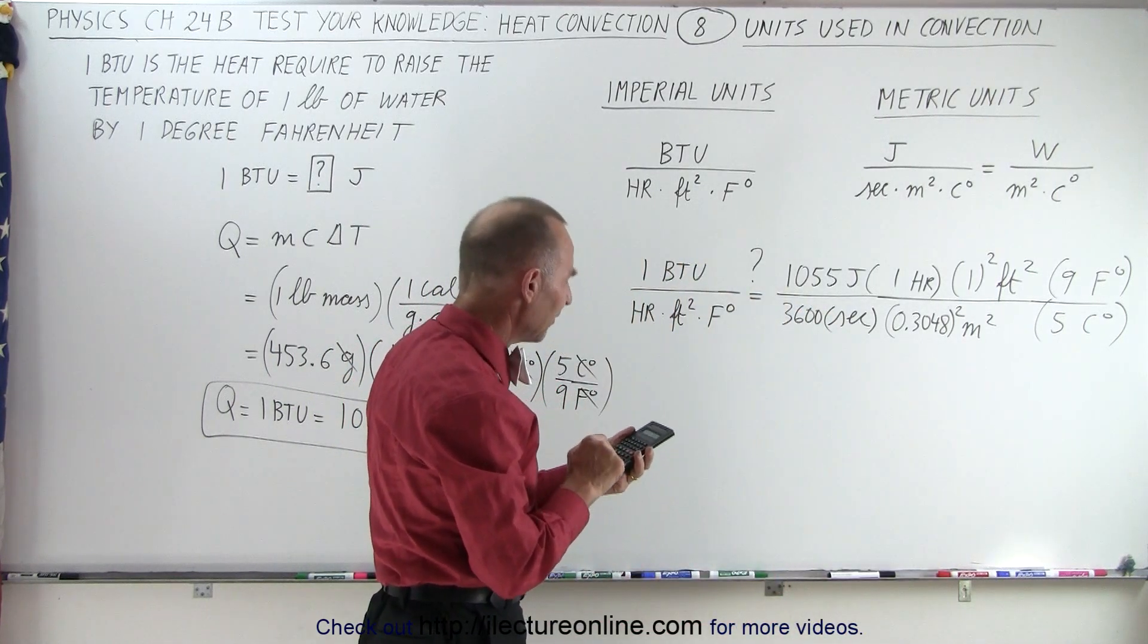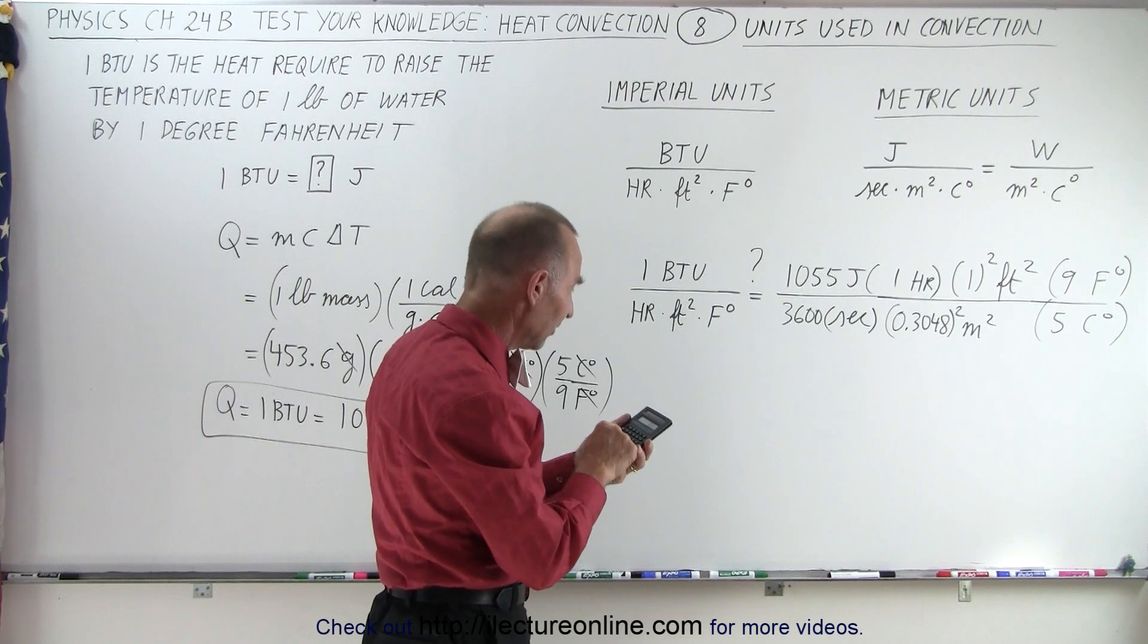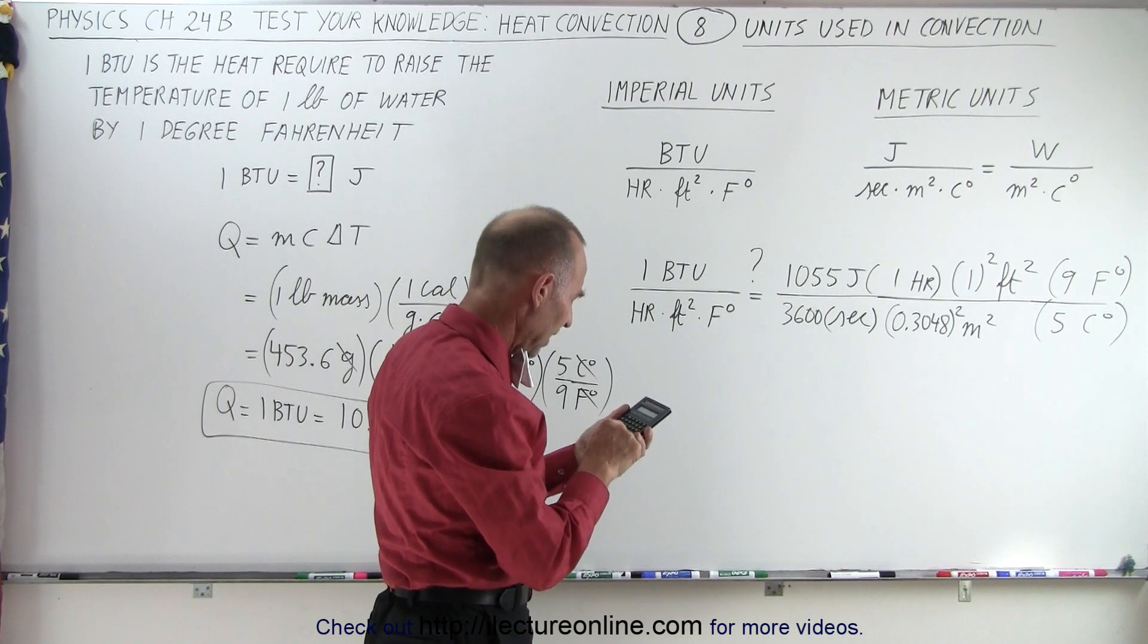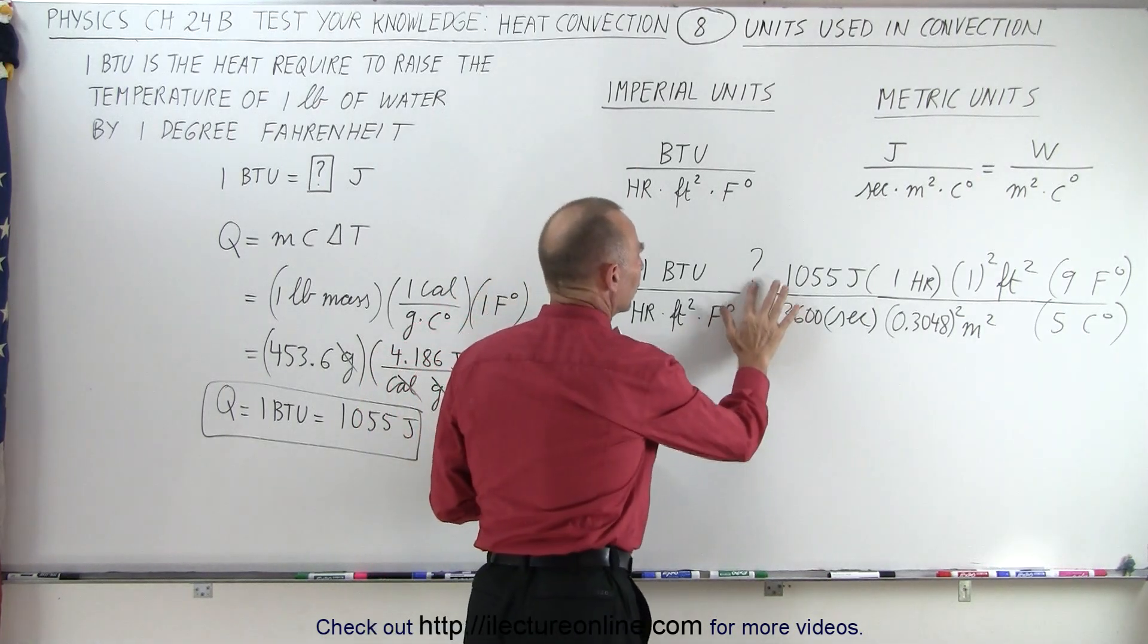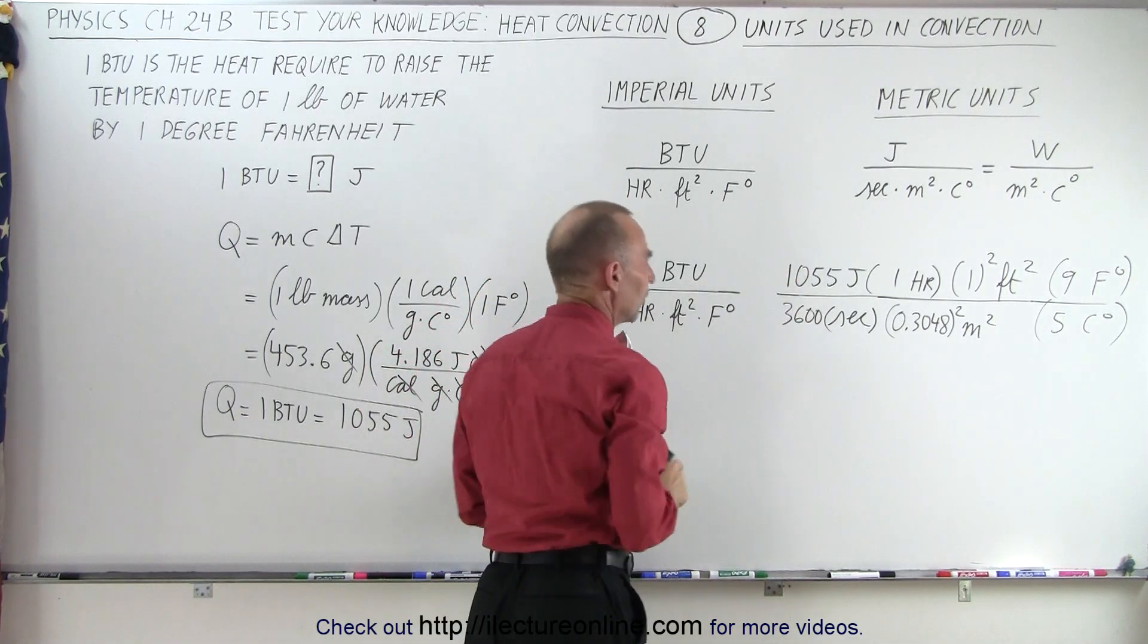So what I can do now is multiply all that out. I have 1055 times nine, divide by 3600, and what I want to do is this here.